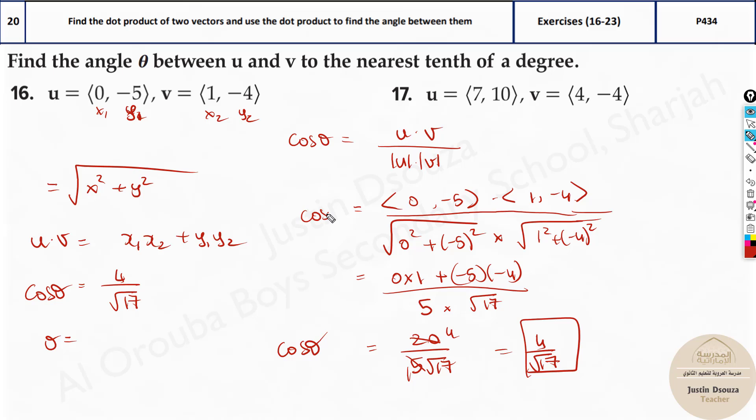Now over here it's cos theta at the left side. So just take the inverse, cos inverse of 4 by root 17, and then you will get the angle theta. You need to use the calculator for that. So we'll take our calculators.